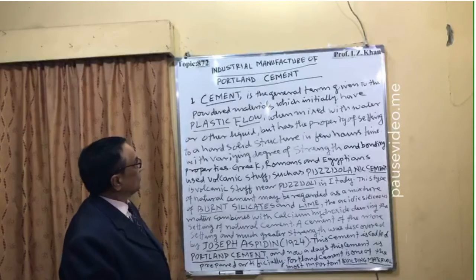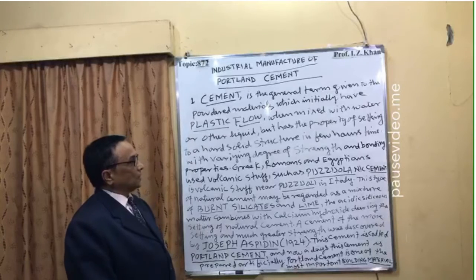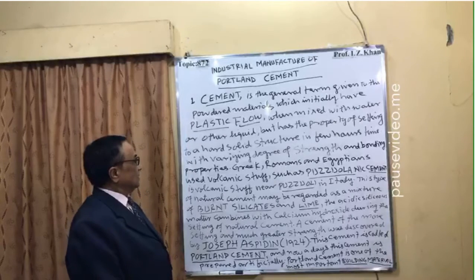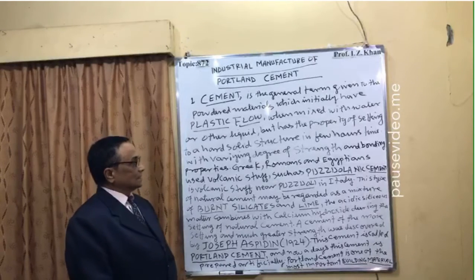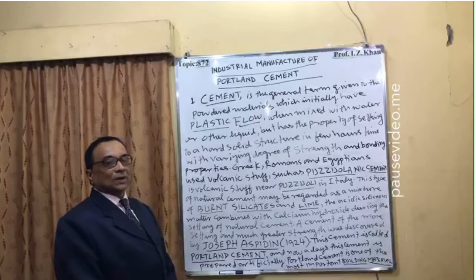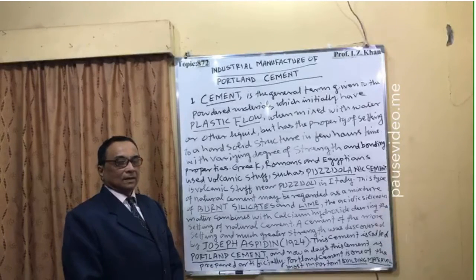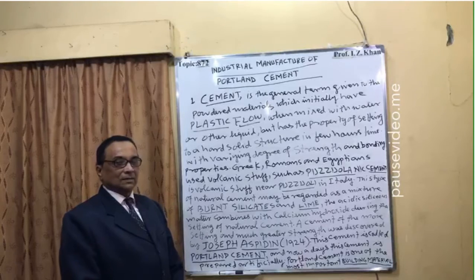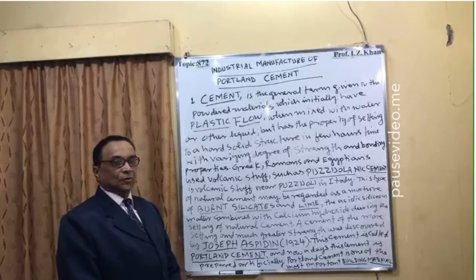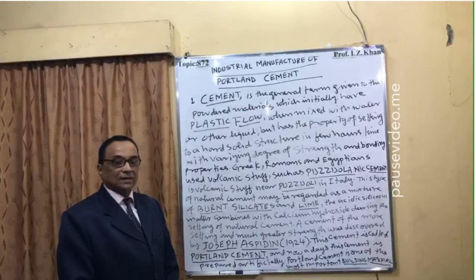When mixed with water or other liquid, cement has the property of setting to a hard solid structure in a few hours time. So it will flow like a liquid, but after some time — maybe within 4 to 5 hours — if you leave it, it will become very hard and a solid rigid structure.